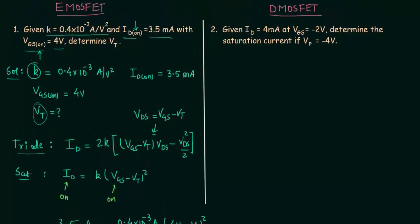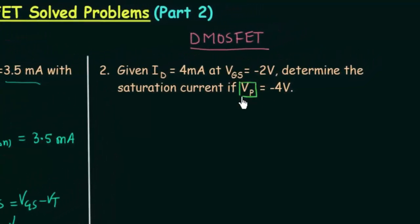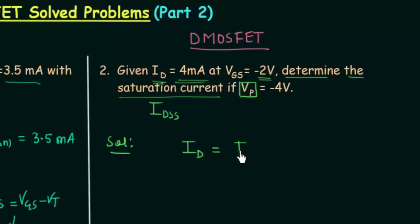Now we will solve the second problem, which is based on depletion type MOSFET because it involves pinch-off voltage VP. Given: drain current ID = 4 mA at VGS = −2 V; determine the saturation current IDSS if VP = −4 V. The formula is the same as for a junction field effect transistor: ID = IDSS × (1 − VGS/VP)².